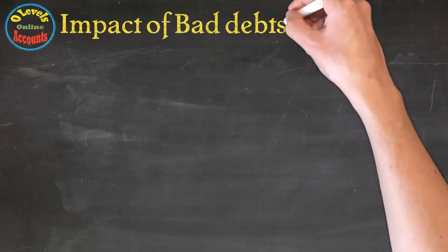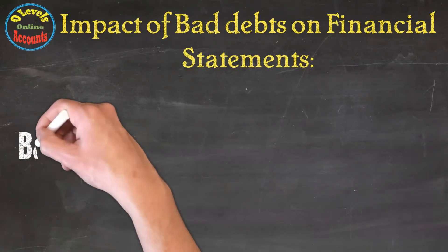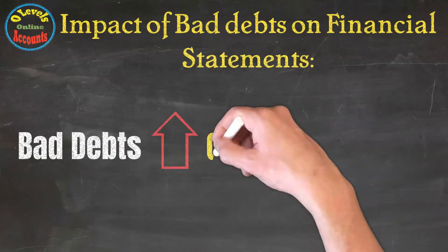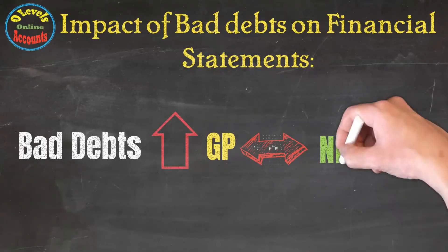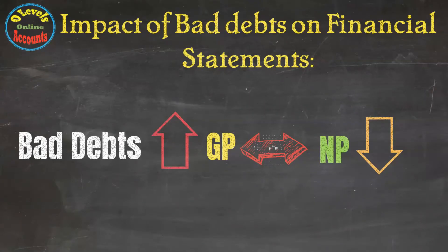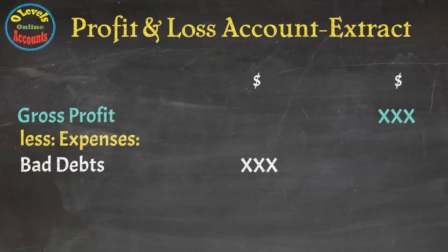The impact of bad debt on financial statements, especially on the trading and profit and loss account: the occurrence of bad debt would not affect the gross profit, but it will decrease the net profit, because expenses are increased and gross profit minus expenses equals net profit. The profit and loss account extract shows that the bad debts expense is reported under the expense heading.